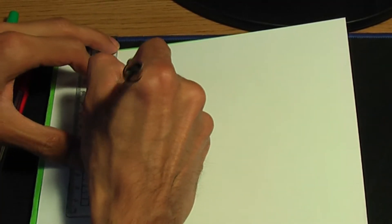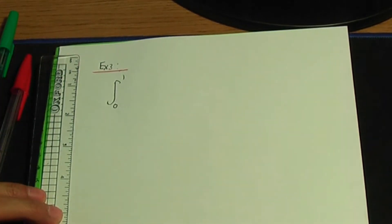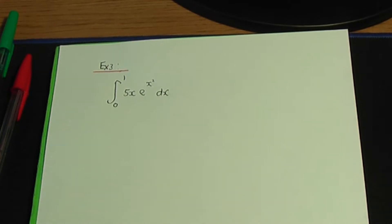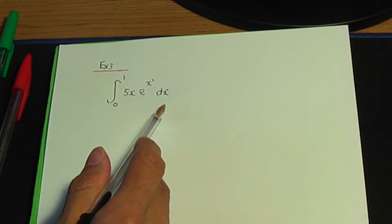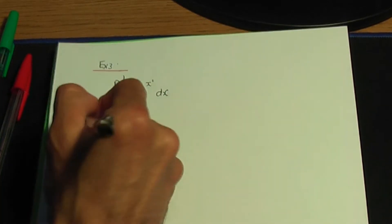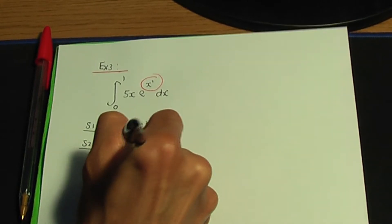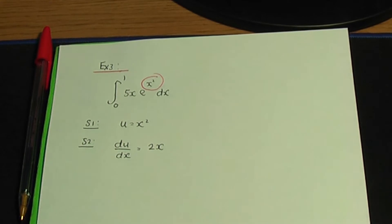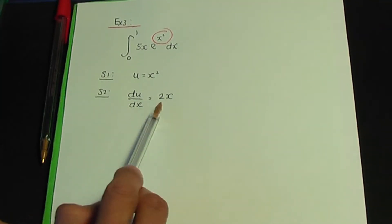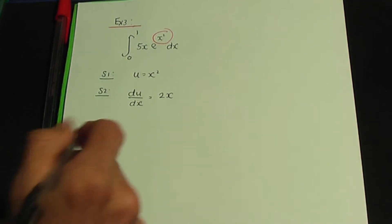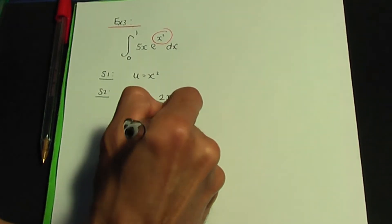For example 3, we have a definite integral with limits 0 and 1, and we're going to integrate 5x times e to the power x squared with respect to x. We can't use the standard results, so let's try substitution. My power is x squared, so I'm going to take u to be x squared. That takes me to step 2 — let's work out du over dx. When I differentiate, we get 2x. By calculating du over dx, that term is related to the remaining terms, so substitution is working. So du is going to be 2x dx.